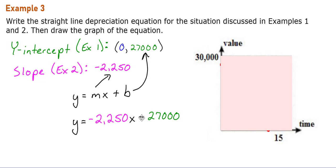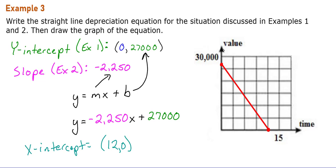To graph it, since we know both intercepts from the previous example—(0, 27000) and (12, 0)—all we have to do is graph both points and then connect them. That will be our depreciation line.